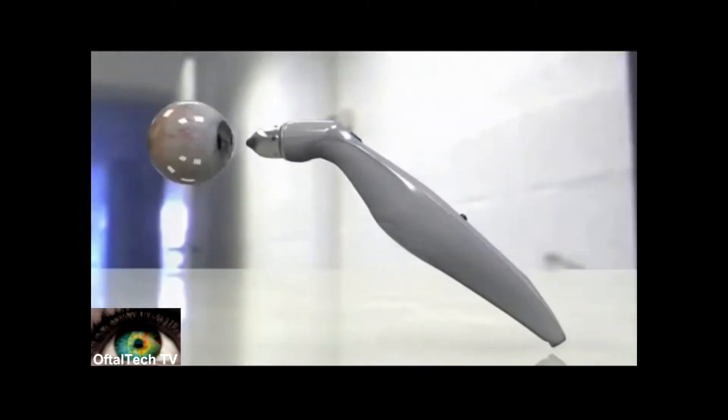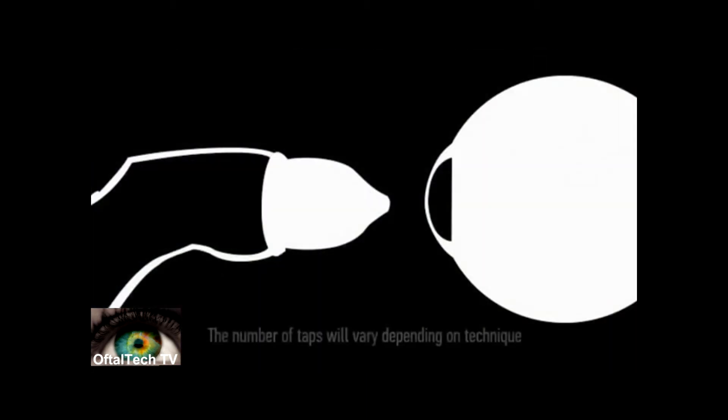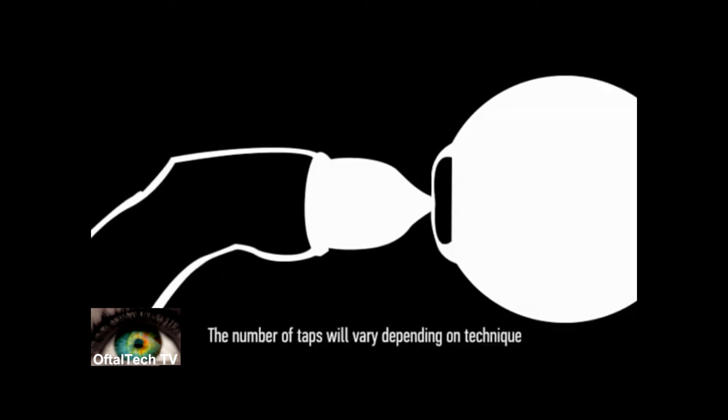After pressing the action button, the AccuPen will beep twice, indicating that it is ready for measurements. Gently tap the transducer tip on the patient's cornea. The probe should be perpendicular and measurements should be taken at the center of the cornea.